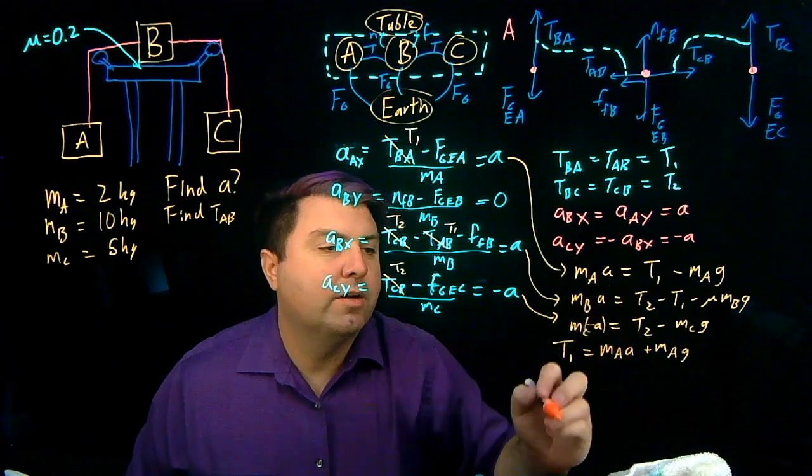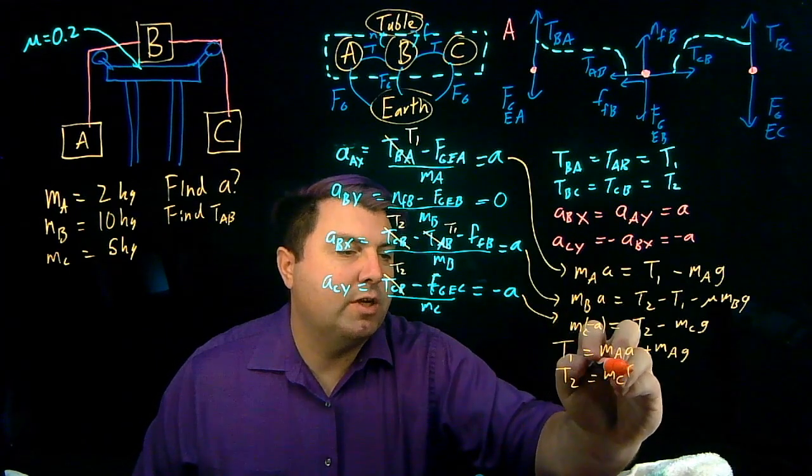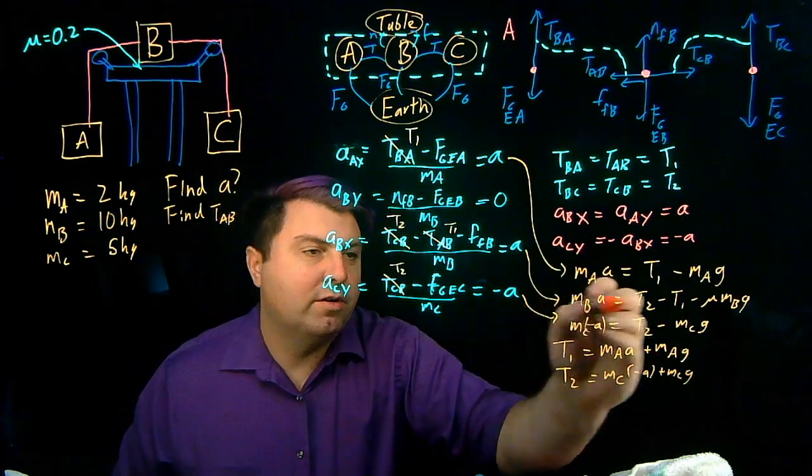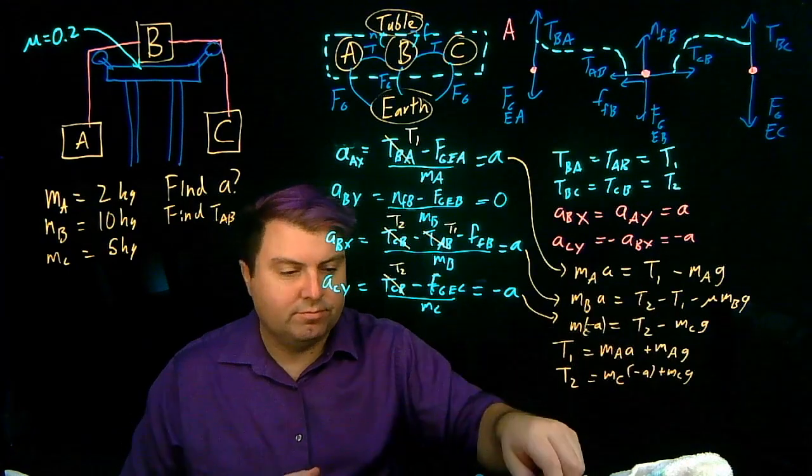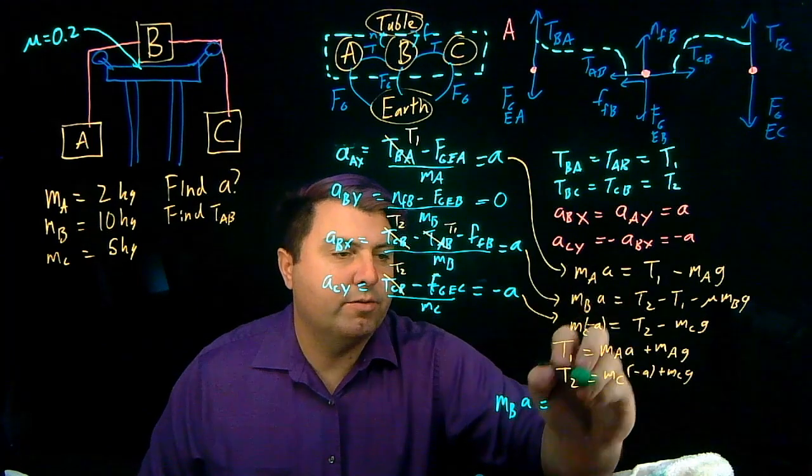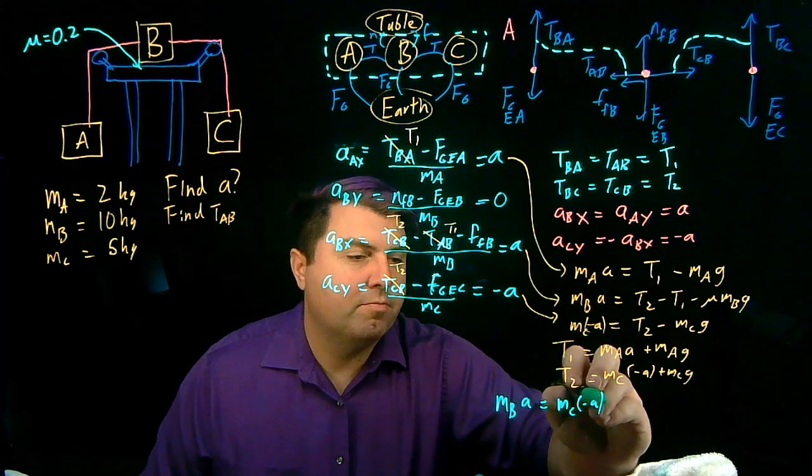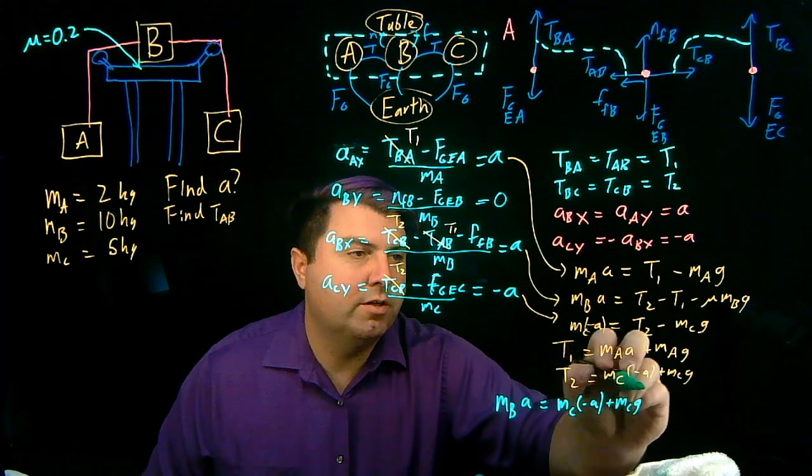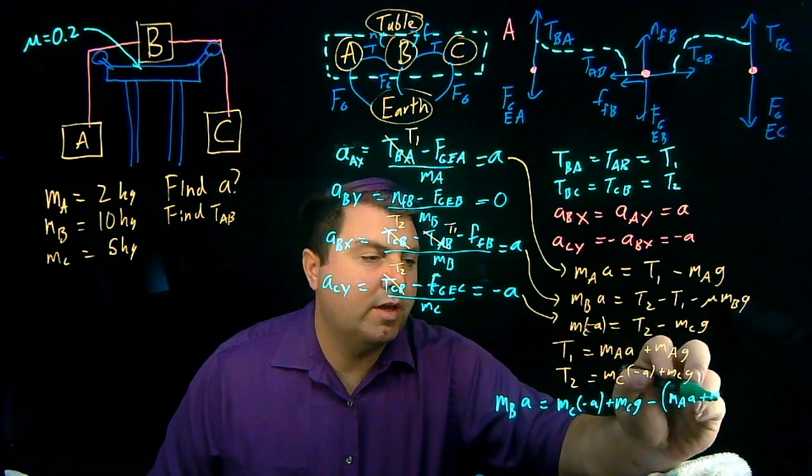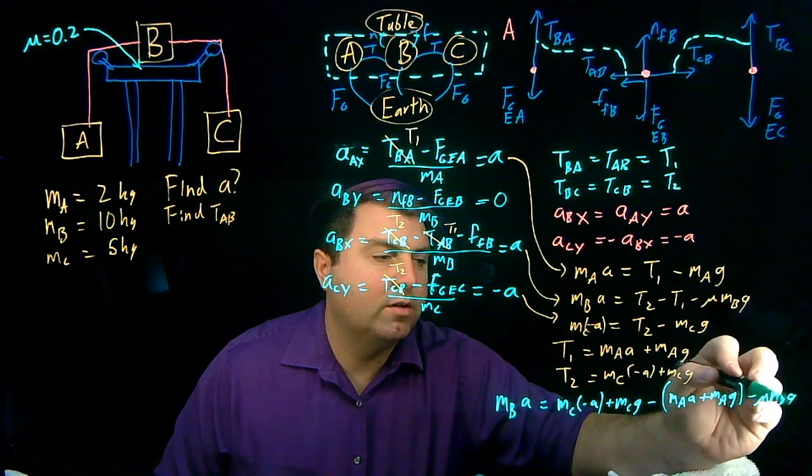I'm sorry, there's a negative A here. And then T2 is going to be MC times negative A plus MCG. And then I can plug it all into this final equation. So now I have MB times A is equal to T2 is MC times negative A plus MCG minus all of T1, which is MA times A plus MA times G minus mu MB times G.